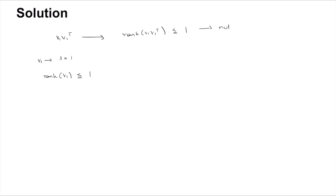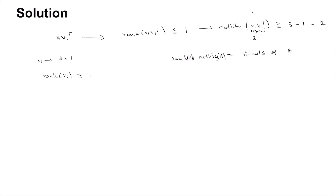This means the nullity of v1·v1ᵀ is greater than or equal to 3 minus 1, which is 2, because rank plus nullity equals the number of columns of the matrix, which is 3. Similarly, the nullity of v2·v2ᵀ is also greater than or equal to 2.